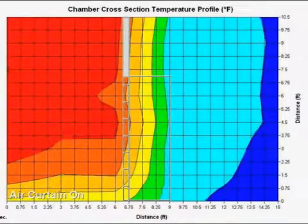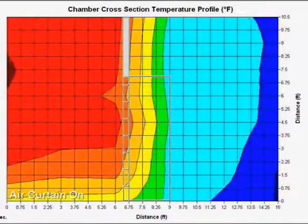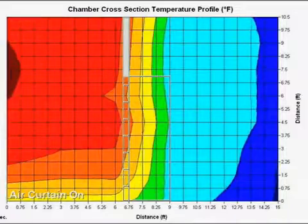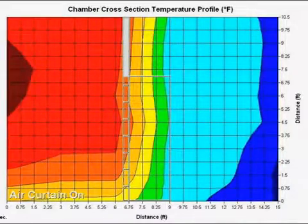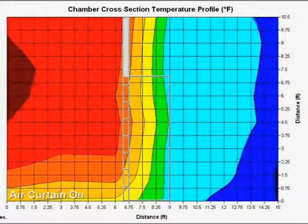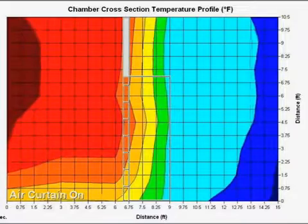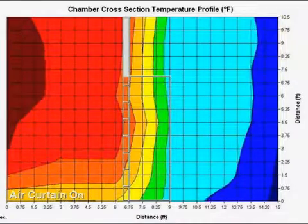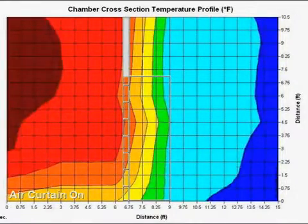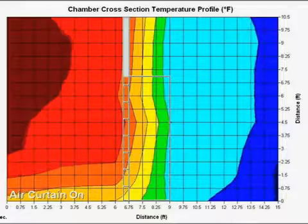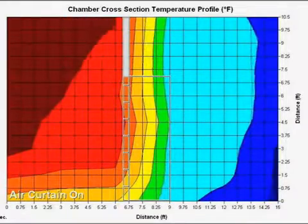The cold air, in blue, is held on that side of the doorway. On the left, or hot side, you can see the temperatures rise very quickly, and the color gradients increase from light red to dark red, as the hot air is held on the warm side.